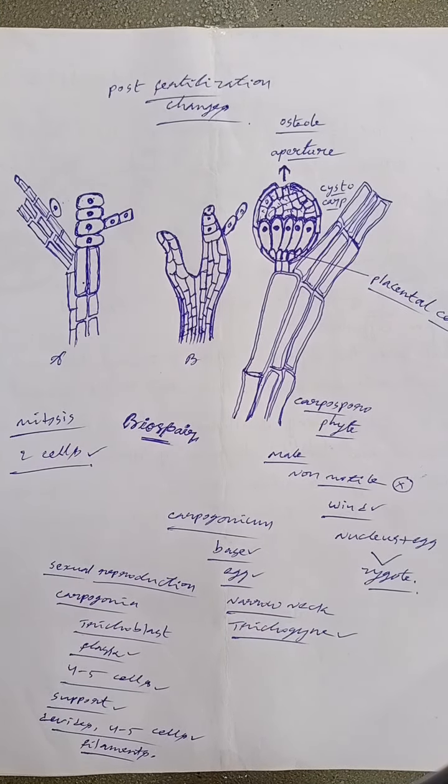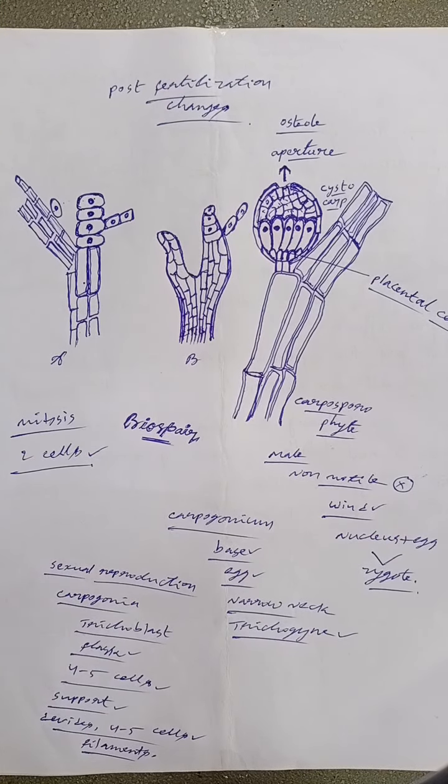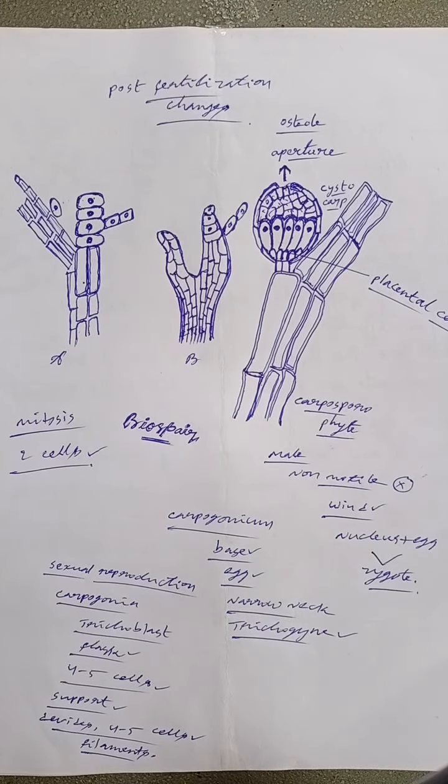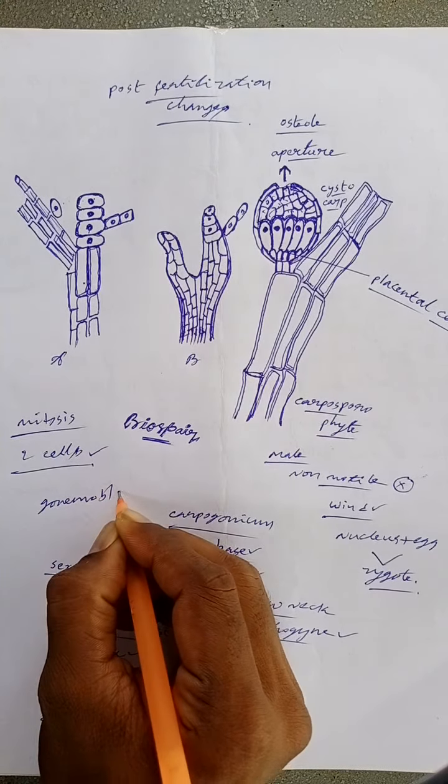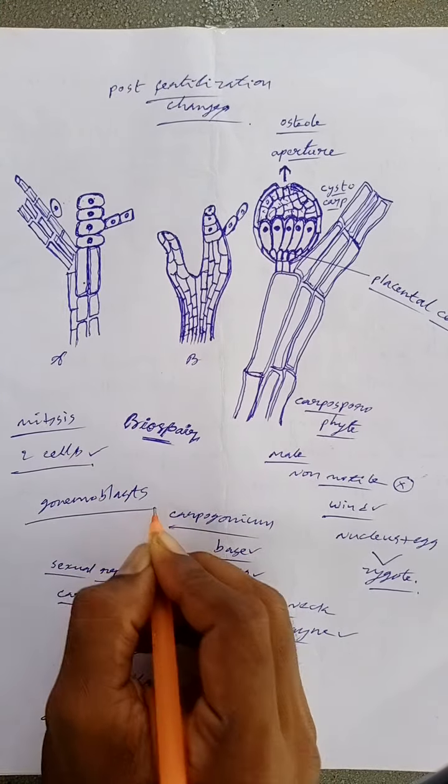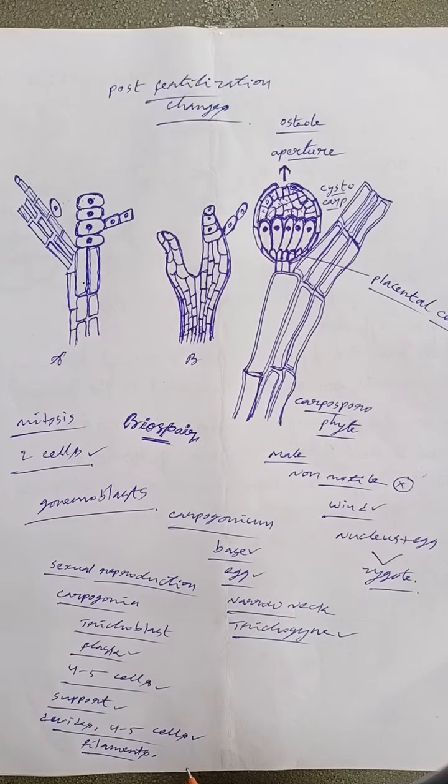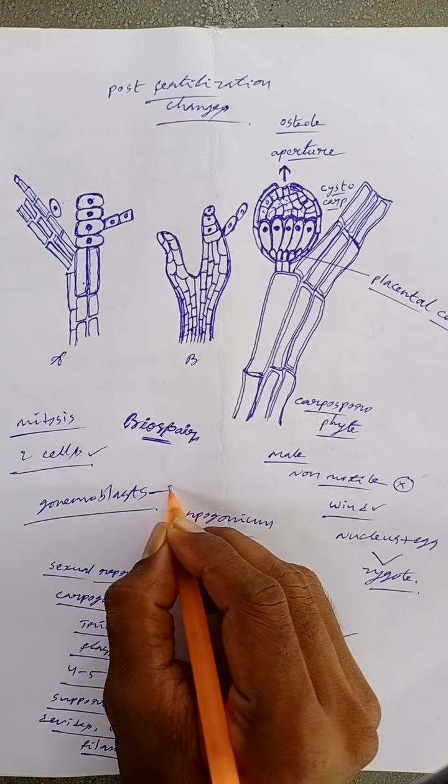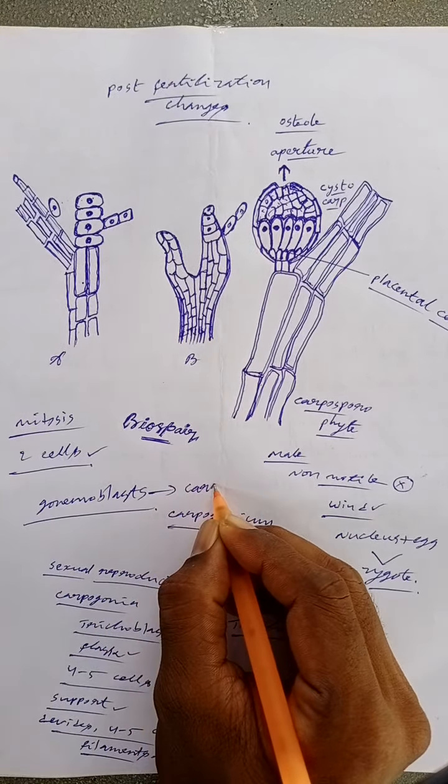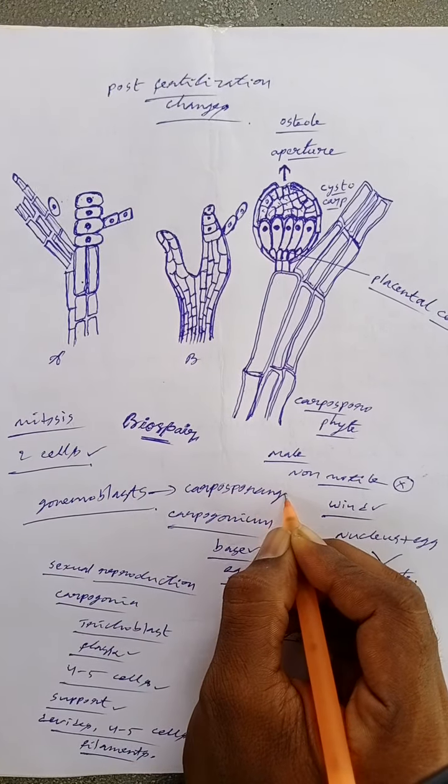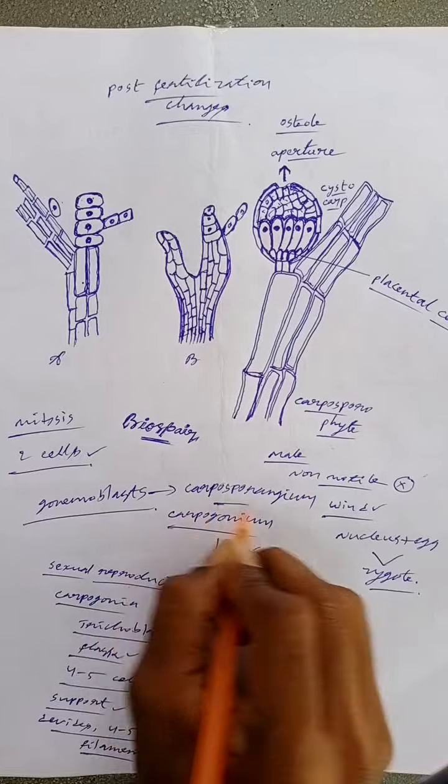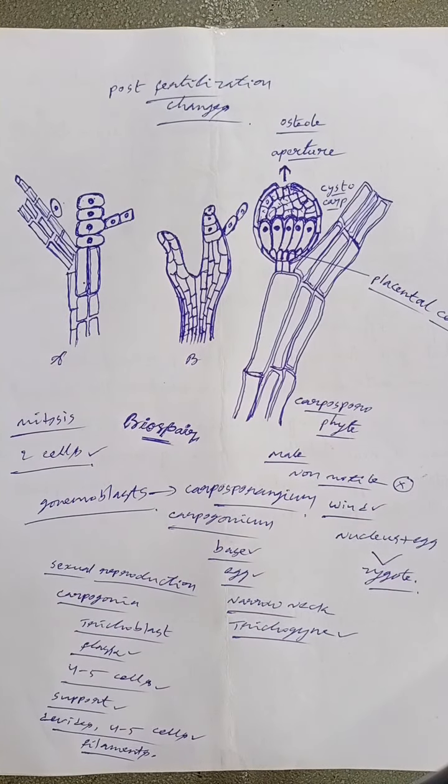These protuberances cut off from the placental cells and function as gonimoblast filaments. The terminal cell of each gonimoblast filament becomes swollen and develops into a pear-shaped carposporangium. The protoplast of carposporangium develops into single diploid carpospore.